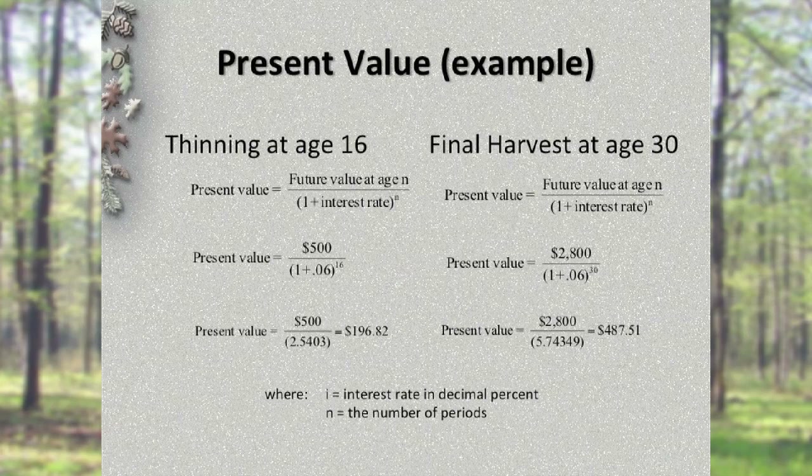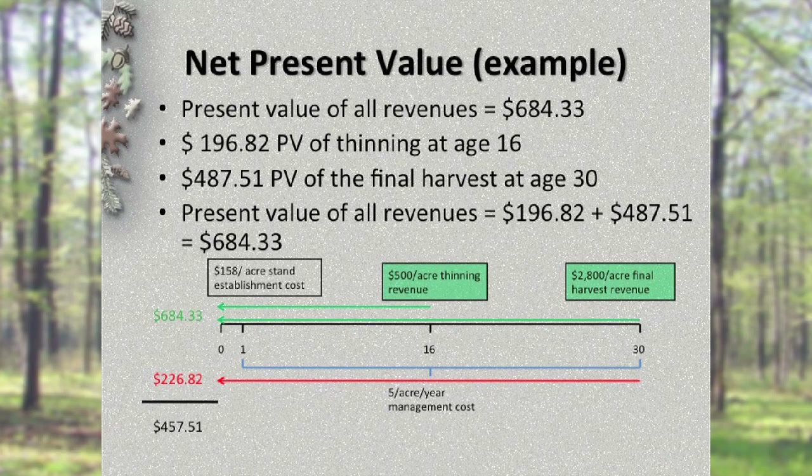We have the thinning at age 16 and the final harvest at age 30. The future value of the thinning at age 16 is $500. Inserting an interest rate of 6% and N = 16 years, the present value formula yields $196.82. For the final harvest revenue at age 30, plugging in $2,800, 6%, and N = 30 years, the present value is $487.51. So the present value of all revenues — $196.82 plus $487.51 — sums to $684.33.